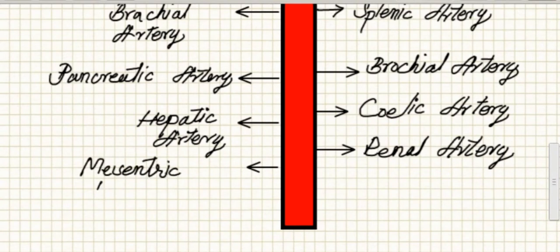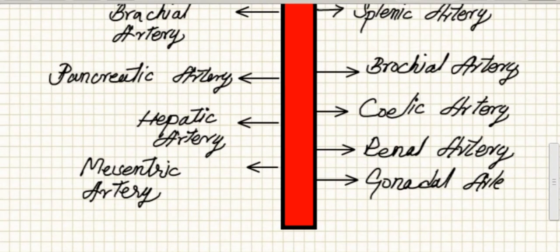Mesenteric artery supplies blood to intestine: the superior mesenteric artery and inferior mesenteric artery. Gonadal artery supplies blood to gonads, which are ovaries and testes, further divided into ovarian and testicular arteries.